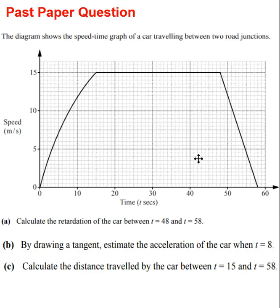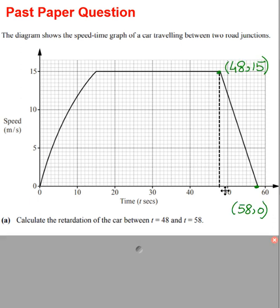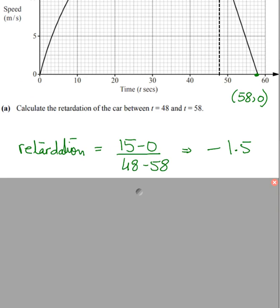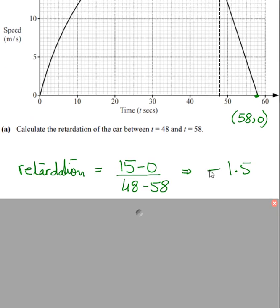Now a different type of question. This shows the speed-time graph of a car traveling between two road junctions. Question one: calculate the retardation between t = 48 seconds and t = 58 seconds. Between 0 to 10 or 10 to 20 there are 10 boxes, so each box represents one second. At 48 seconds is here, 58 seconds is here. Apply the gradient formula at this section. The gradient gives the acceleration or retardation. You get retardation of 1.5. With the word retardation, don't write minus.